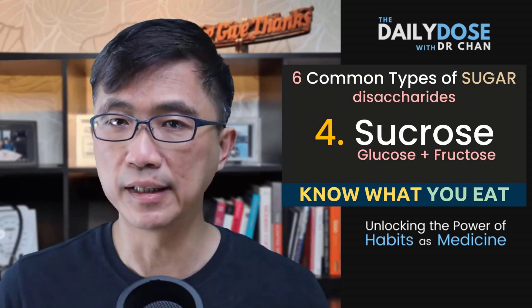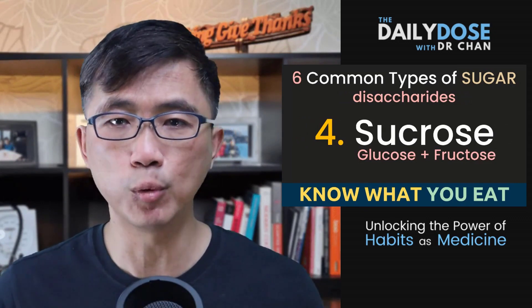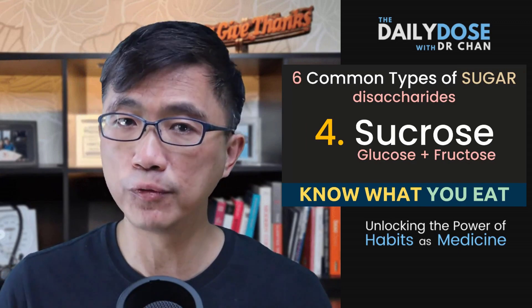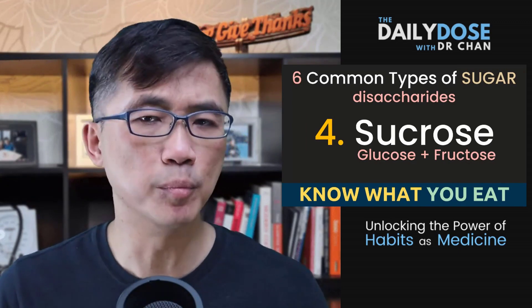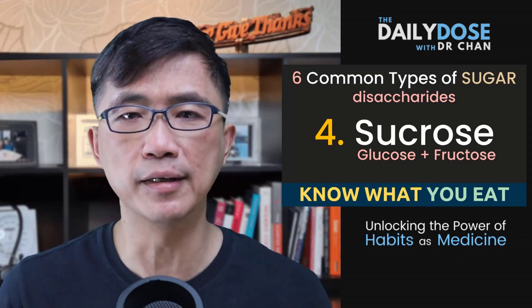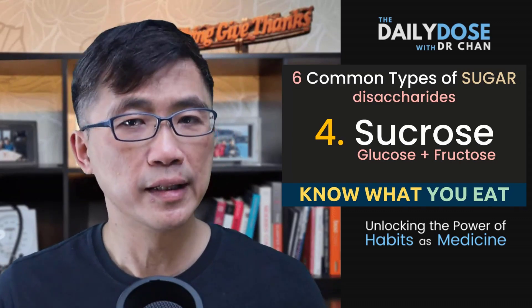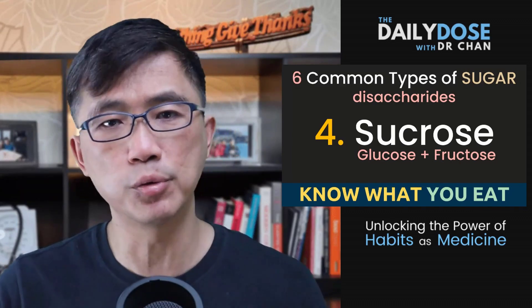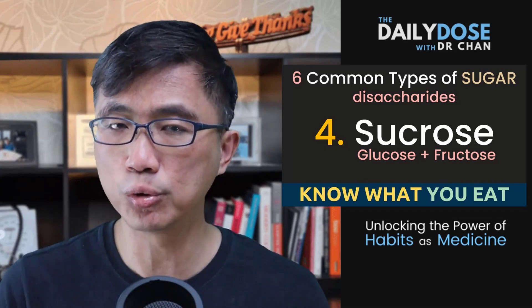Sucrose is a disaccharide. It is made up of one molecule of glucose linked to one molecule of fructose. Sucrose is one of the most common forms of sugar in our diets. It is found in some fruits and vegetables. Table sugar — the sugar that we add to our foods — is actually sucrose.